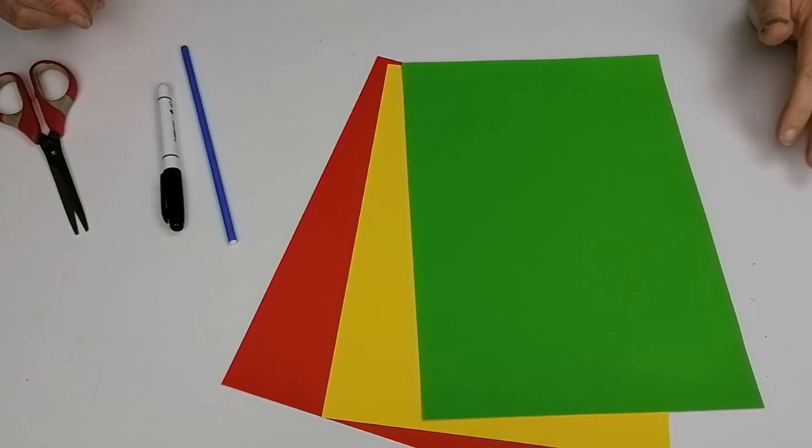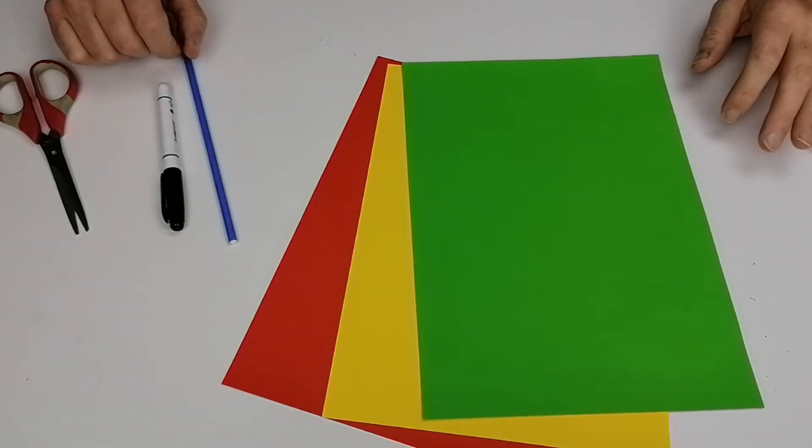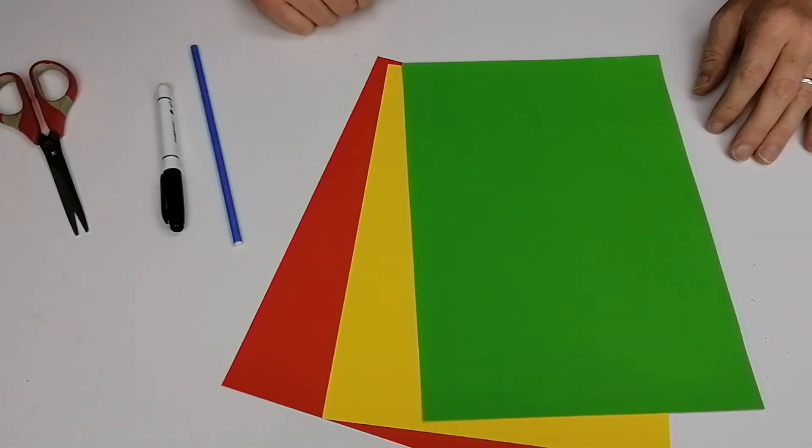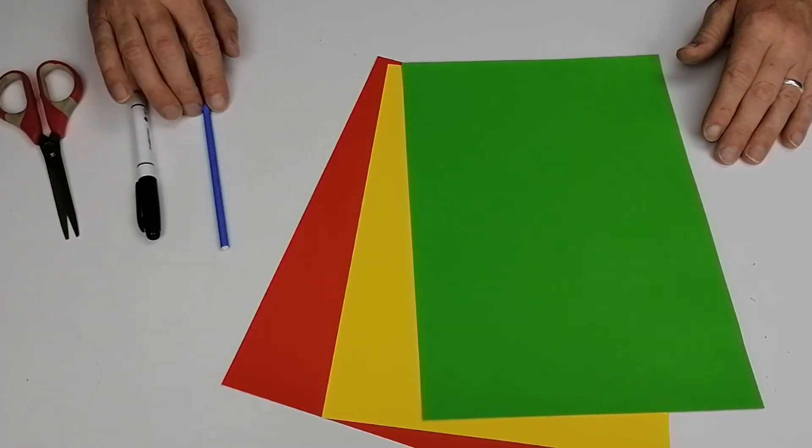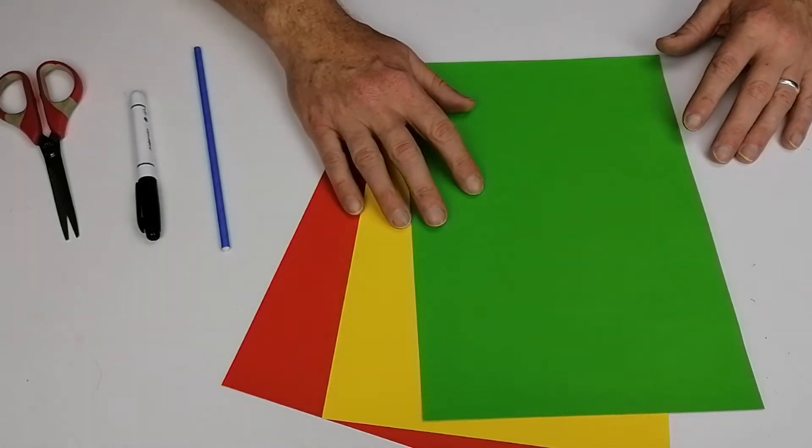In this activity we're going to make a caterpillar that you move by blowing air through a straw. What you need for this is scissors, a marker, a paper straw, and some card.